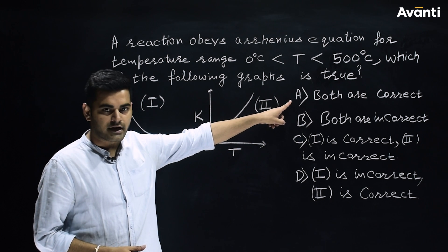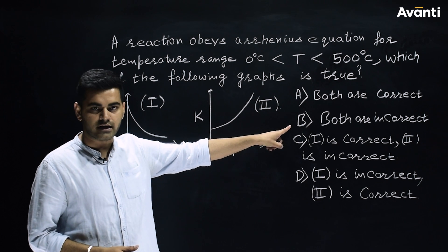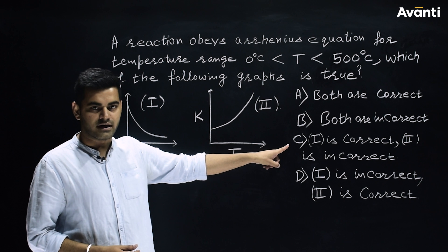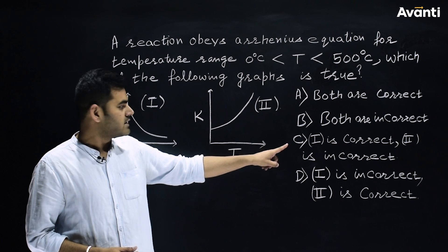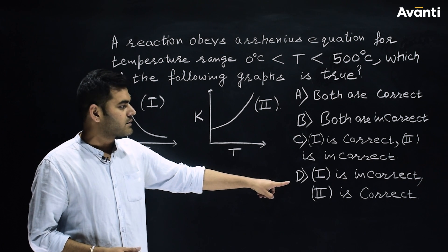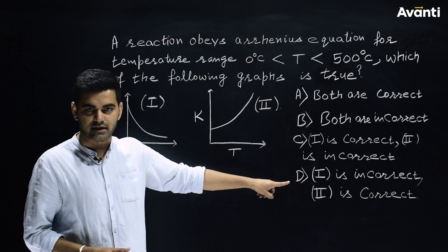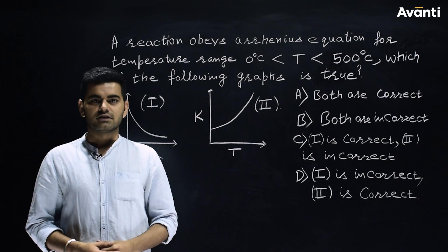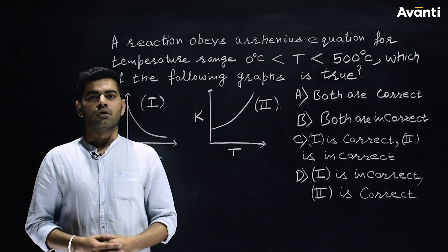Option A: both are correct. Option B: both are incorrect. Option C: one is correct, two is incorrect. Option D: one is incorrect and two is correct. Let's pause this video and try to attempt on your own.